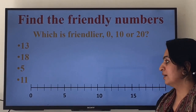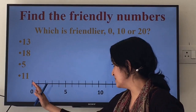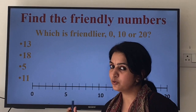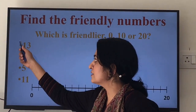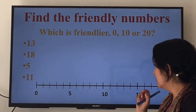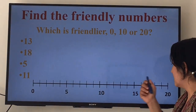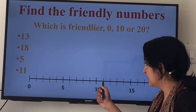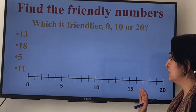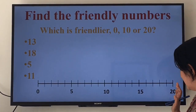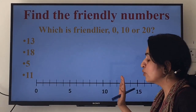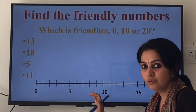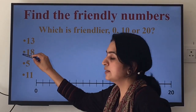Let's look at a few more examples. Here I have made a number line from 0 to 20, and the nearest 10 on either side of a number is a useful benchmark. Let's consider the number 13. 13 is between which two tens? As we can see, 10 is here and 20 is here, so 13 is between 10 and 20. And 13 is closer to 10, so we can say that 13 is friendlier to 10.